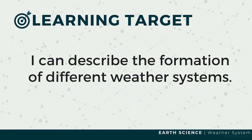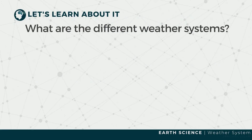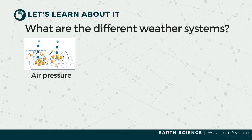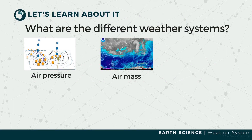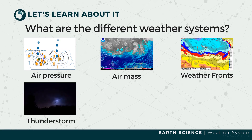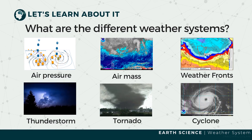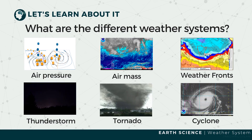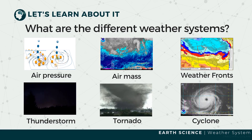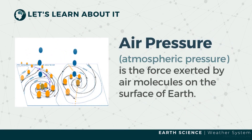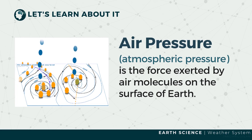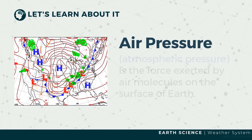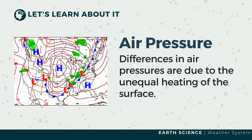But what are these weather systems? Air pressure, air masses, fronts, thunderstorms, tornadoes, and cyclones are examples of weather systems. Air pressure or atmospheric pressure is a force exerted or a pressure on the Earth's surface. Differences in air pressure in different areas are due to unequal heating of the surface.